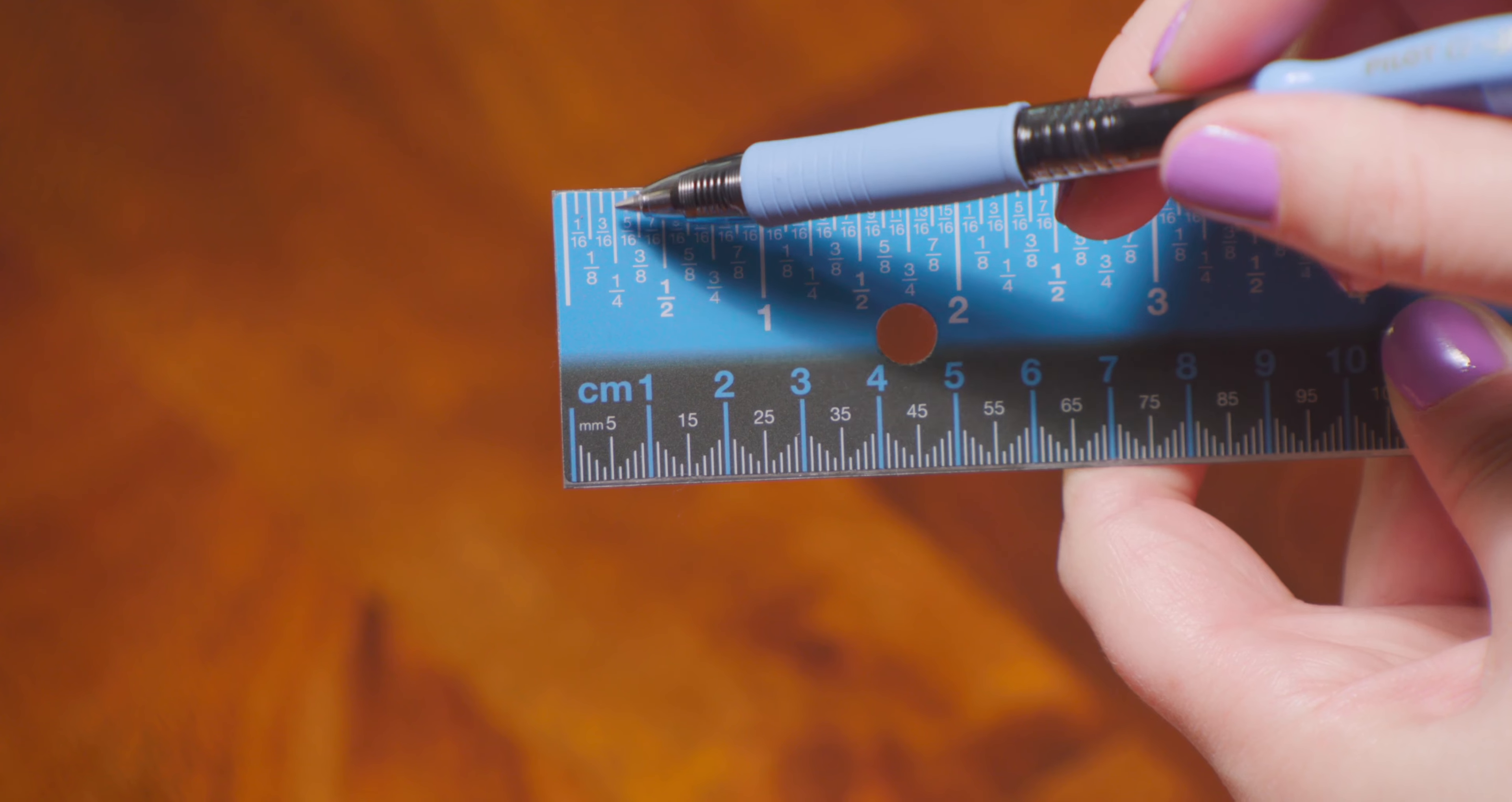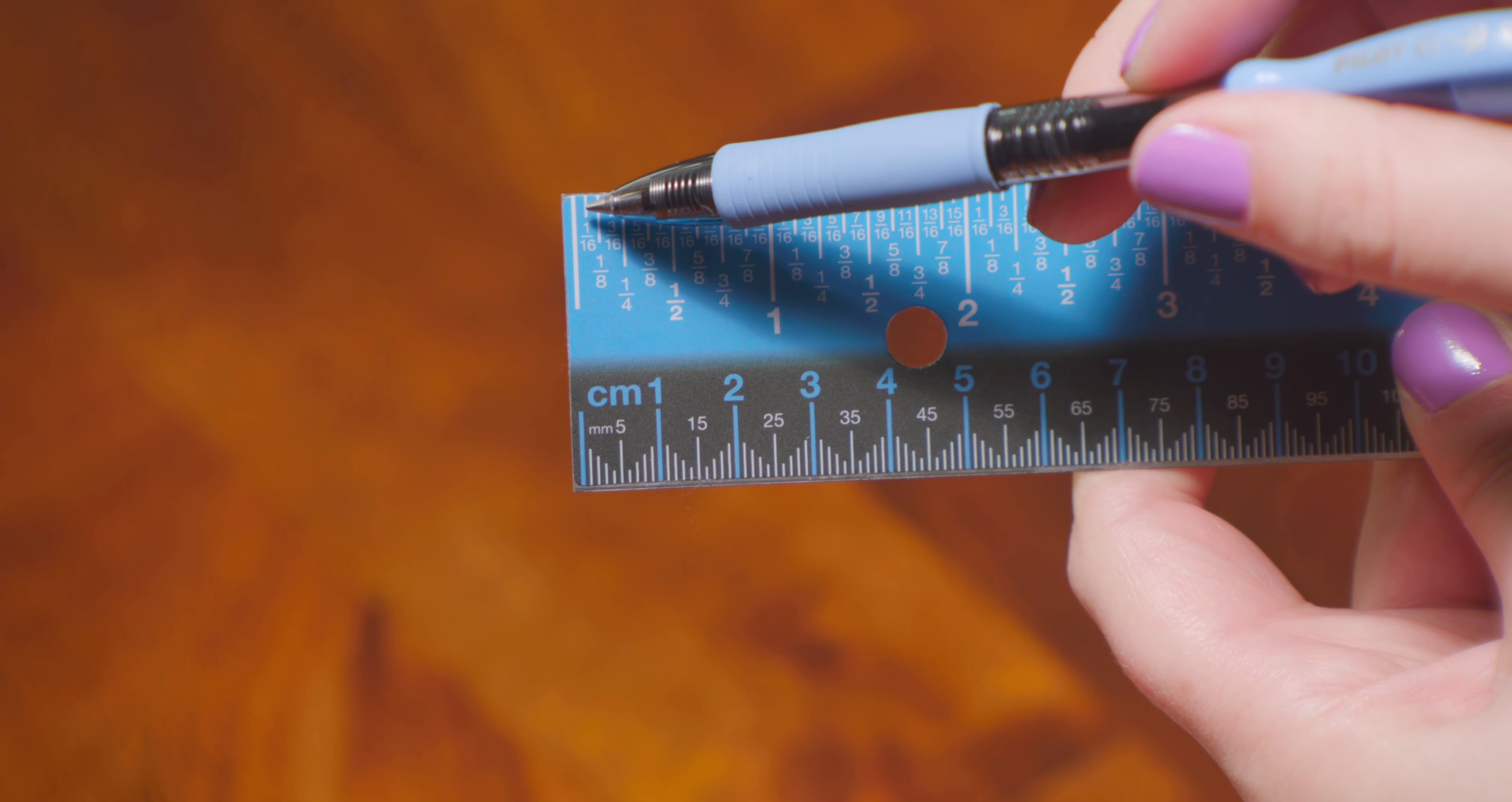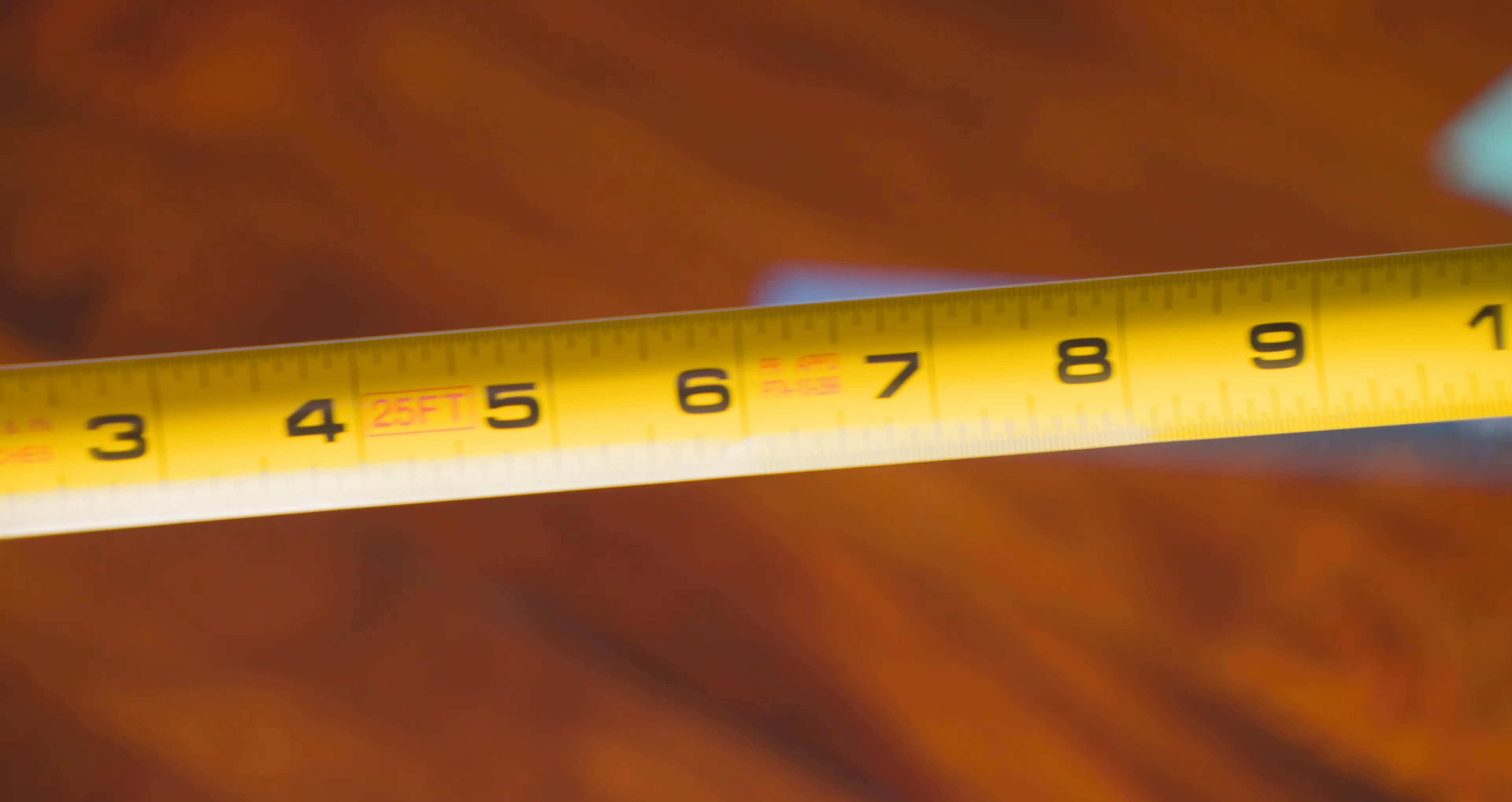Half of that will be a quarter inch mark, half of that will be an eighth inch mark, and half of that will be a 16th inch mark. Most rulers and measuring tapes indicate these increments with varying line heights.